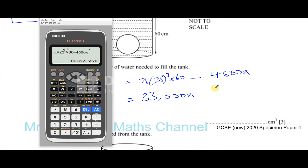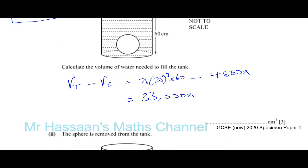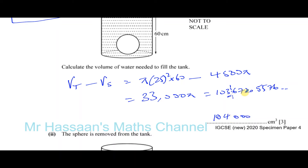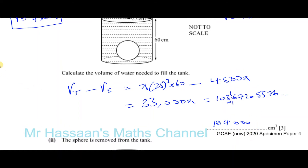Our answer isn't specified to a certain number of figures, so we round to three significant figures. Converting 33,000π: pressing S-to-D gives 103,672.5576... Rounding to three significant figures — the zeros between significant figures are significant — so we round to the nearest thousand, giving 104,000. That's the answer to part b(i).